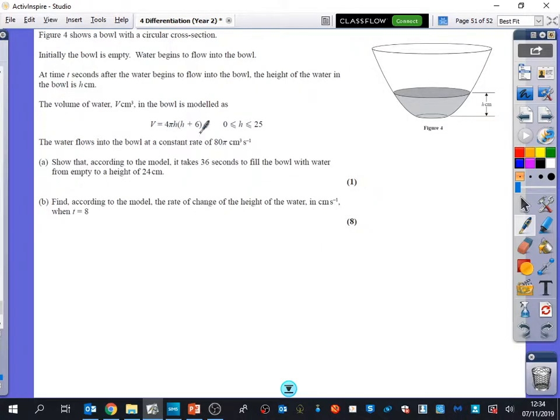We have been told that the volume has this formula here. We then get told that the water flows into the bowl at a constant rate of 80π centimeters cubed per second. So immediately that is telling me that dV/dt is 80π. Every second, 80π centimeters cubed of water is going into the bowl.